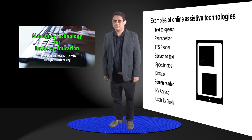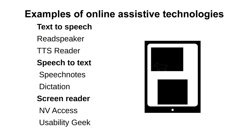There are different examples of online assistive technologies that you can find on the web. For text to speech, we have Read Speaker and TTS Reader. For speech to text, we have Speech Notes and Dictation.